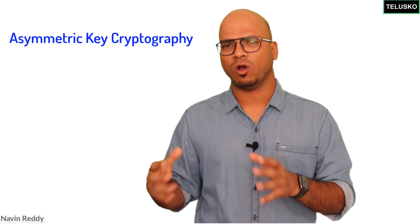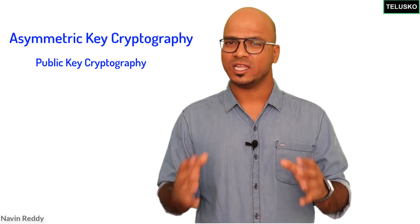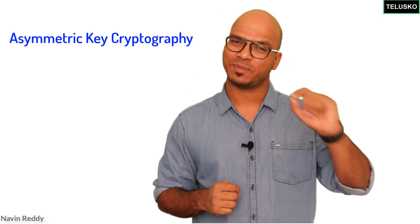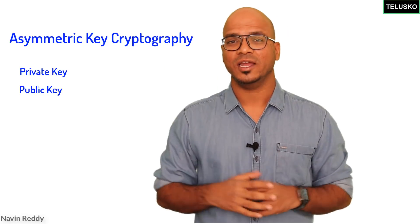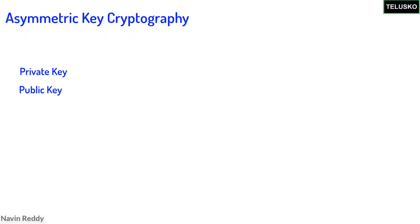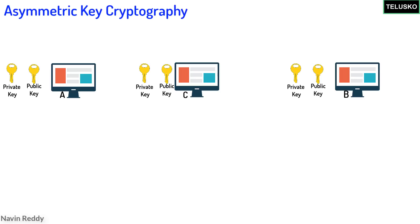Asymmetric cryptography is also known as public key cryptography. We use two different keys here: one is the private key and one is the public key. On the network, everyone will have two keys. Each node will have a private key and a public key. So A will have its own private key and public key, B will have its own private key and public key, and C will have its own private key and public key.